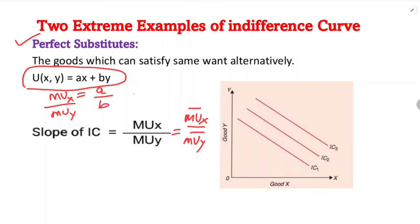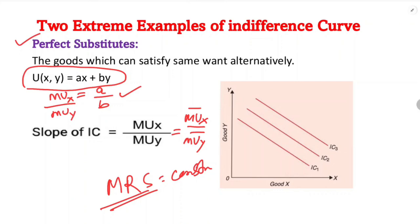Since the slope is constant — with 'a' being constant and 'b' being constant — the slope remains constant throughout. So in the case of perfect substitutes, the marginal rate of substitution is constant, and because of that the indifference curve becomes a straight line.